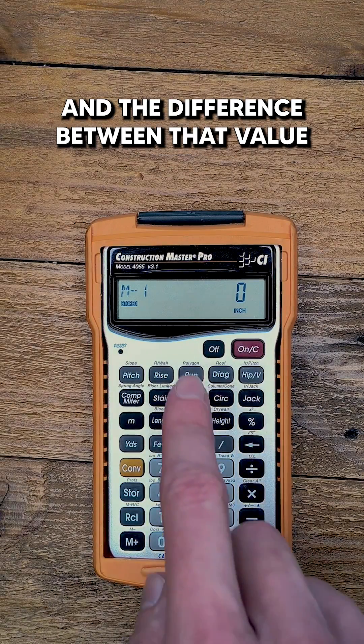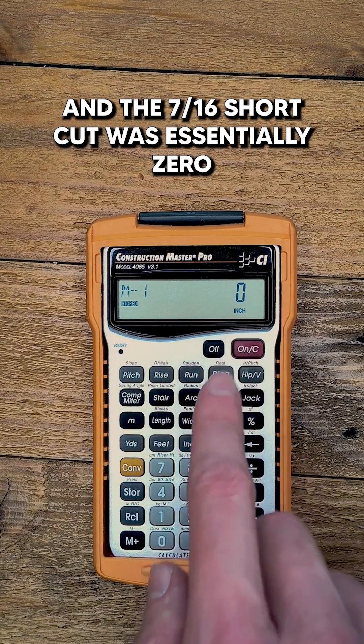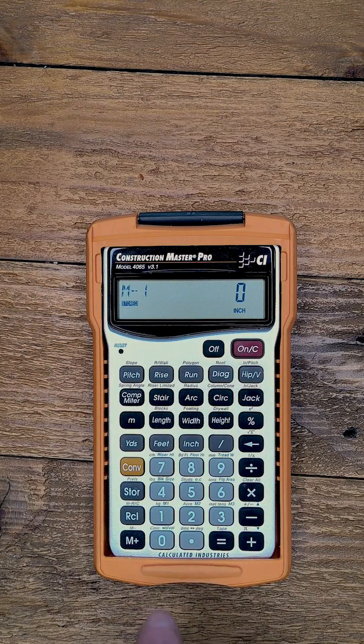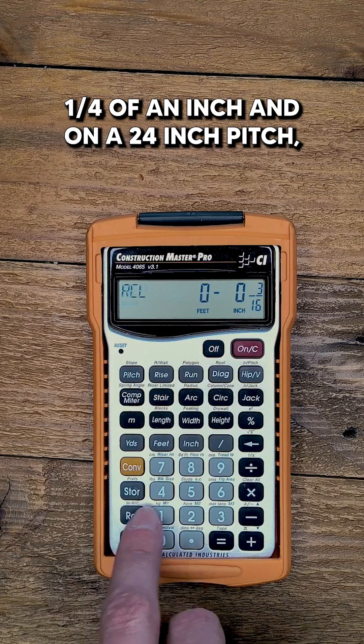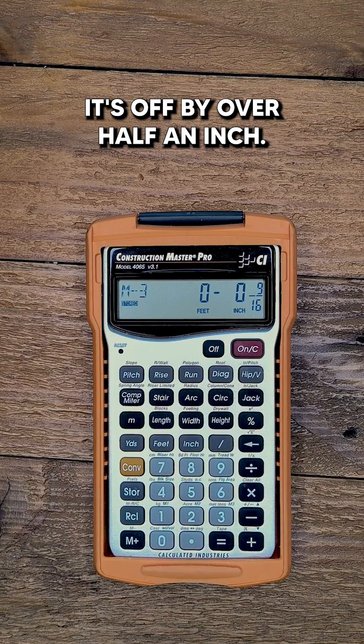and the difference between that value and the 7 sixteenths shortcut was essentially zero. For a 12 inch pitch, the shortcut is off by almost a quarter of an inch, and on a 24 inch pitch, it's off by over half an inch.